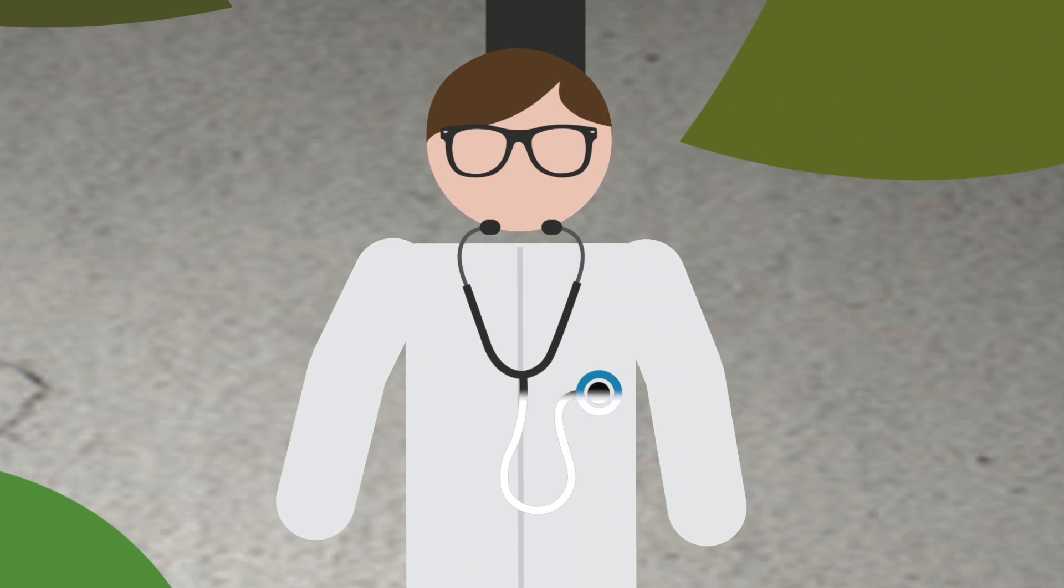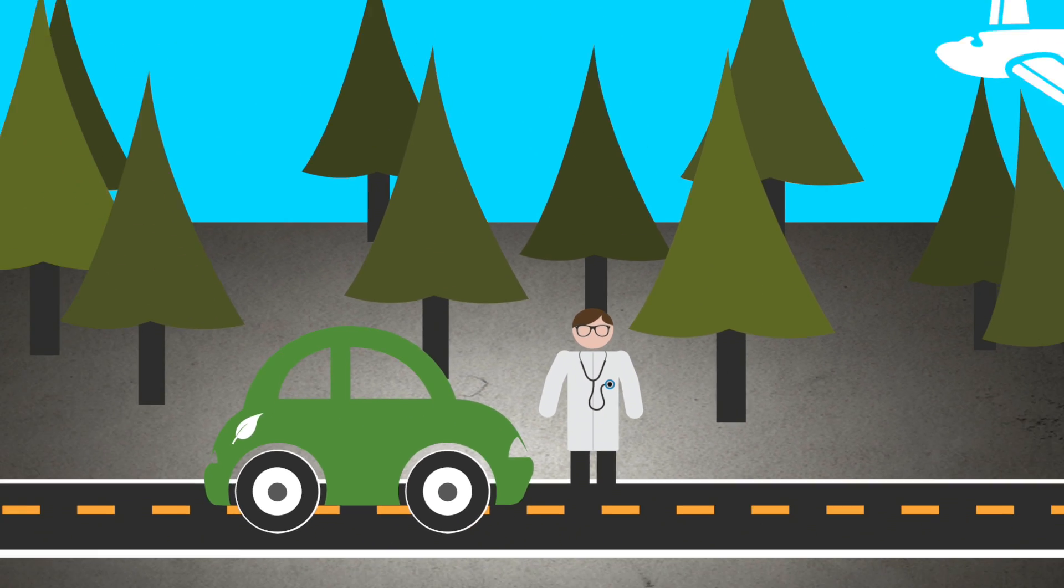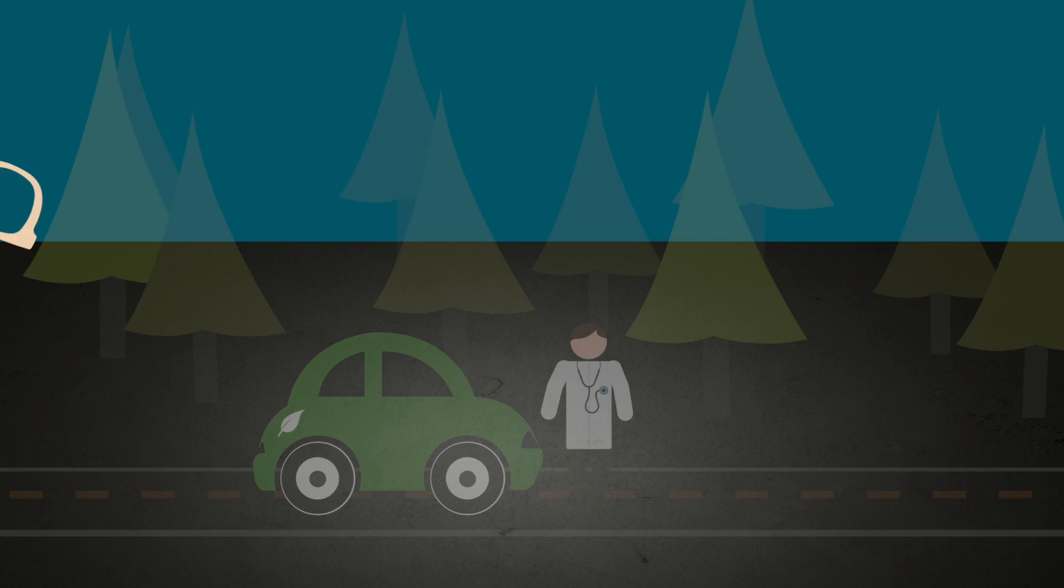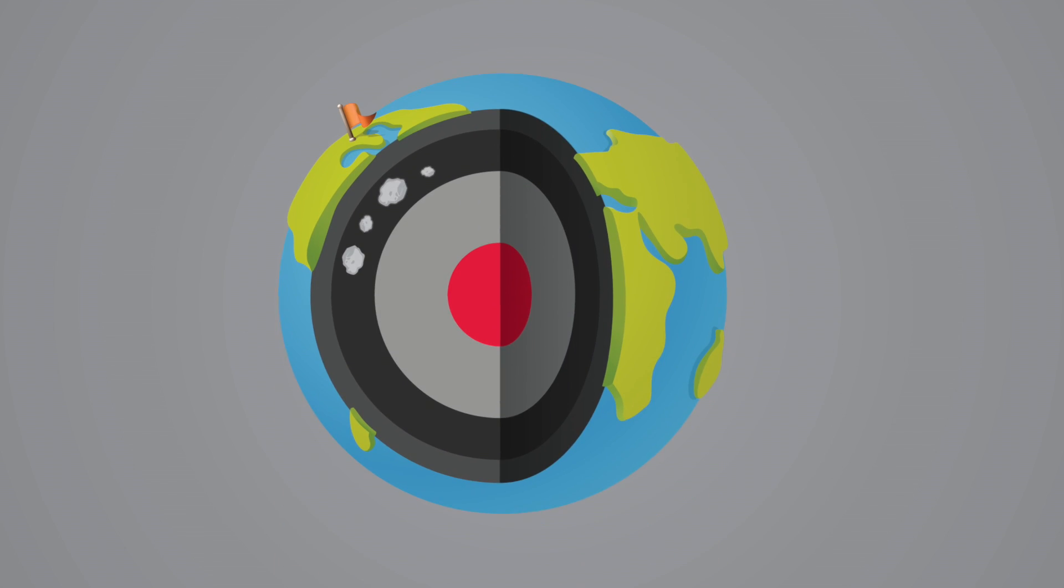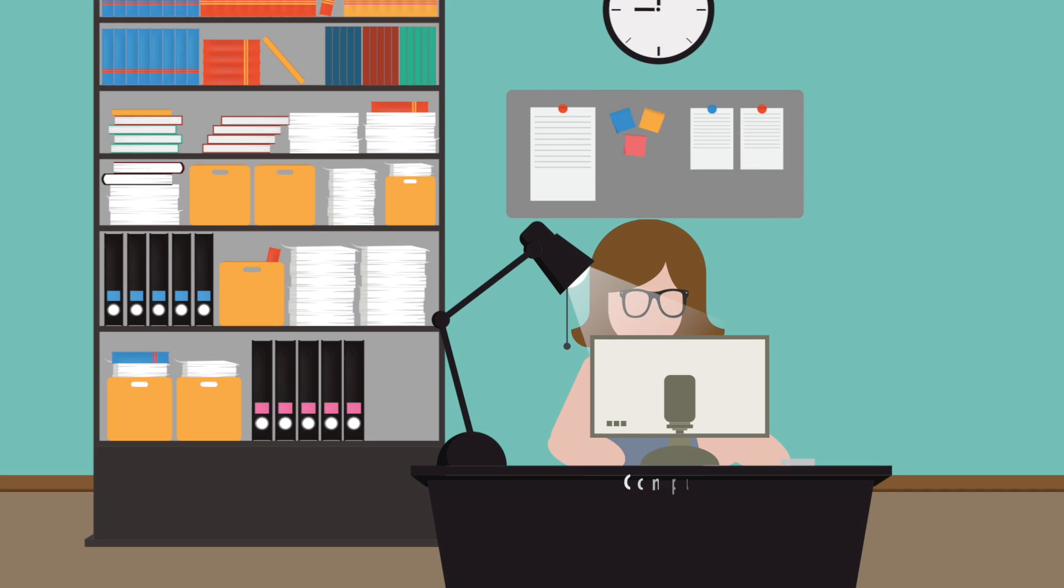What do cars, stethoscopes, eyeglasses and airplanes have in common? Nickel and copper. Nickel and copper are natural minerals that come from deep inside the earth. In fact, everything around us is made from raw materials that come from the earth.